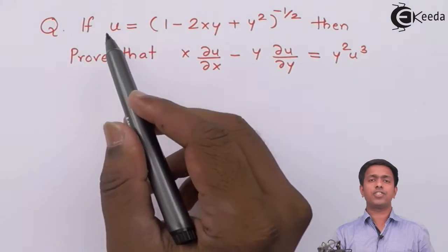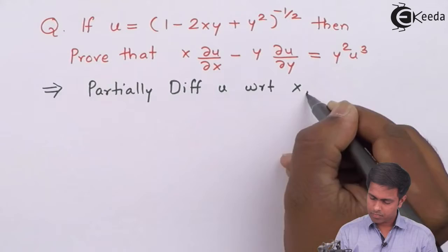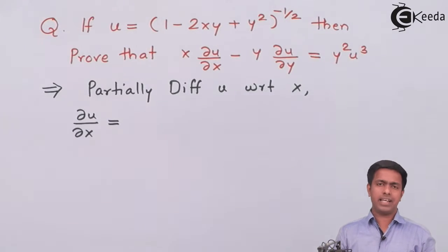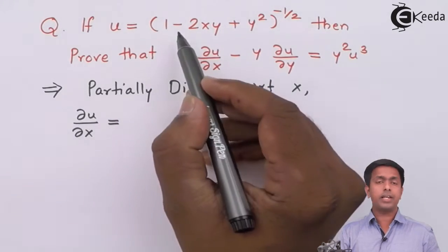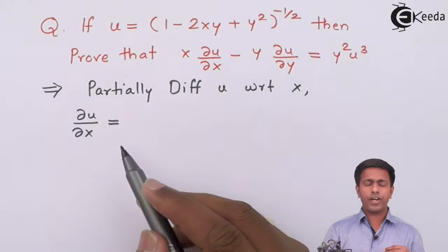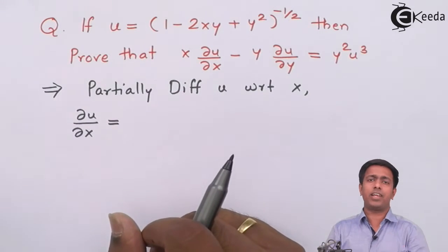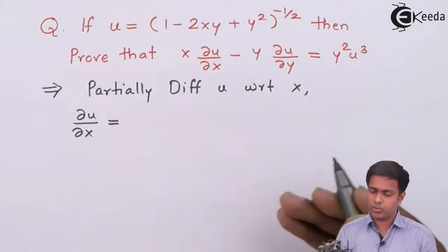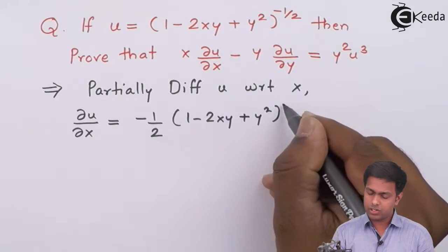Let's start. First of all, we will partially differentiate u with respect to x. Here we will get ∂u/∂x. There are many pronunciations for this — some people call it del u by del x, so I will call it del u by del x. It is equal to the differentiation of u with respect to x. As per the rule from the previous video, we keep the second variable as constant. Since I am differentiating with respect to x, I am going to treat y as constant. If I differentiate this with respect to x, I will get negative half times (1 minus 2xy plus y squared) whole raised to negative 3 upon 2.